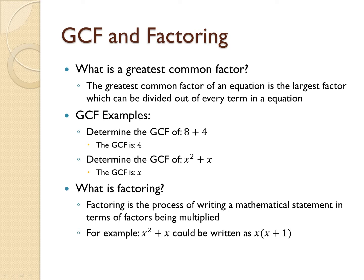For example, x squared plus x could be written as x times x plus 1 because if you were to divide x squared plus x by x, you would get x plus 1 as your result. So, you're basically writing the original statement as its greatest common factor times the result of the division of the original statement by its greatest common factor.